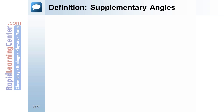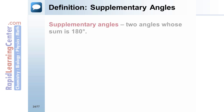Definition: Supplementary Angles. Supplementary angles are two angles whose sum is 180 degrees. In the figure, angles 1 and 2 are supplementary angles.